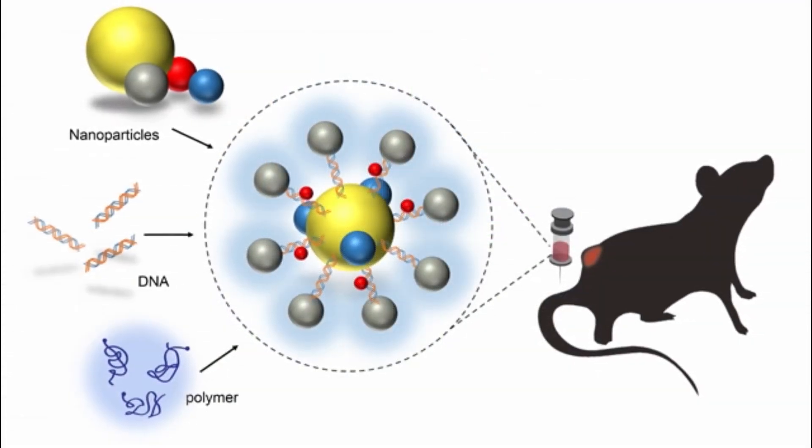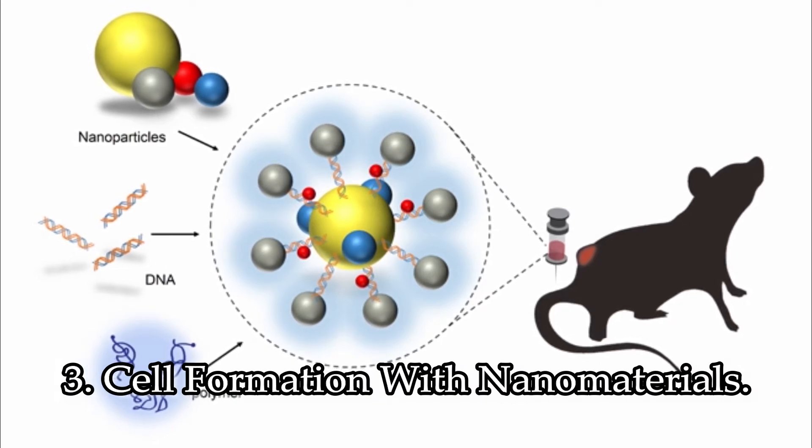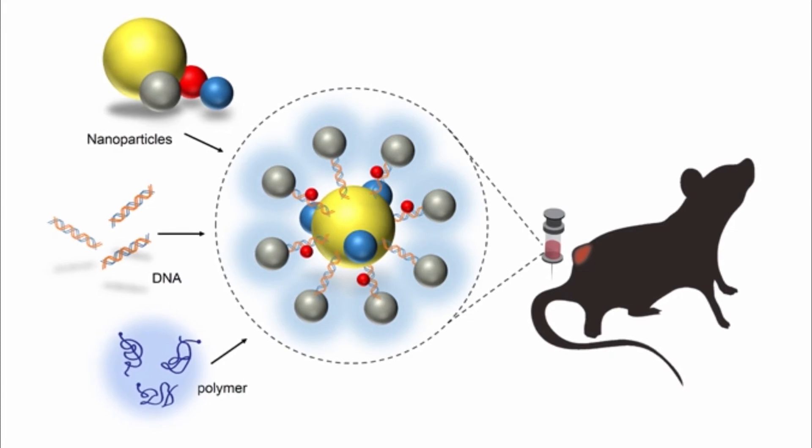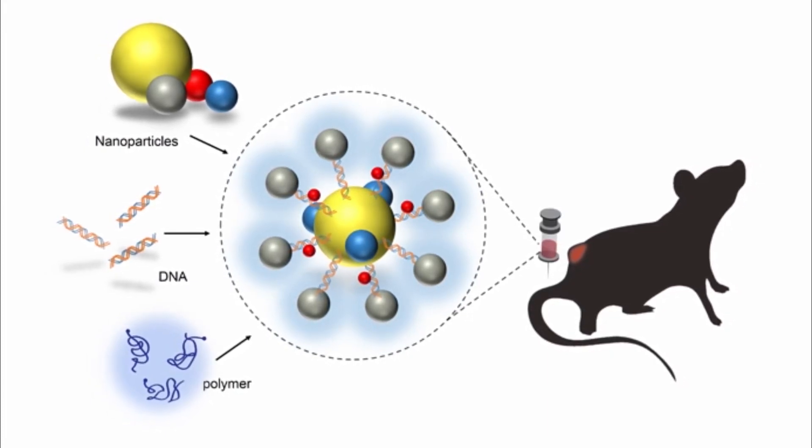Next, mice which are injected with nanomaterials have regained the ability to use paralyzed limbs. The nanofibers stimulate the body to regenerate lost or damaged cells.